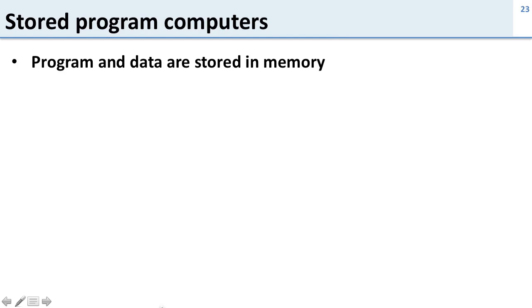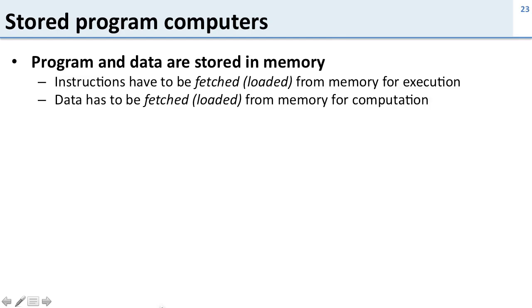The second key concept here is how programs are stored. MIPS are stored program computers which means the program and data are stored in memory. In order for this to work we have to fetch or load instructions from memory before we can execute them, and we have to fetch or load data from memory before we can compute on it. That's not surprising, they're both stored in memory.